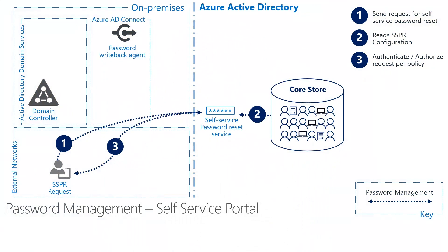Once the Reset workflow begins in step three, the user will have to verify ownership of their account using the verification steps enforced by the admin. Depending on the verification method set, a user can select from resetting their password using an alternative email message, text message, phone number, security questions, or using a notification from the Authenticator app.